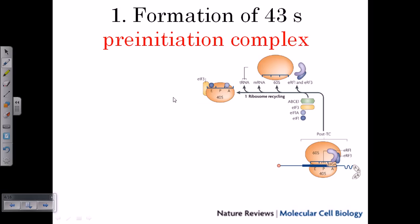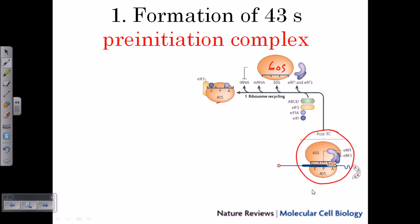Let's look at the first stage — formation of the 43S pre-initiation complex. We have the 40S subunit and the 60S subunit. These ribosomes are not made every time we need to synthesize a new protein; they are recycled inside the cell and reused. So what we see here is the complex from the previous translation cycle. After that, the 60S and 40S subunits are separated from each other along with the mRNA, and all factors are recycled.